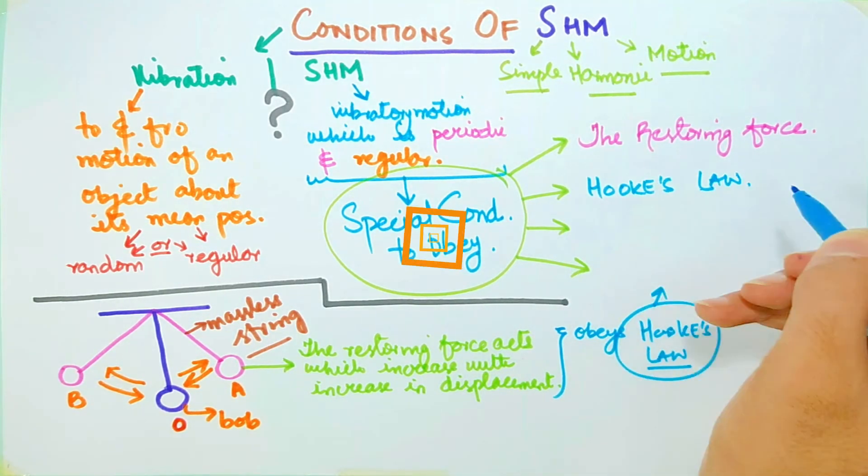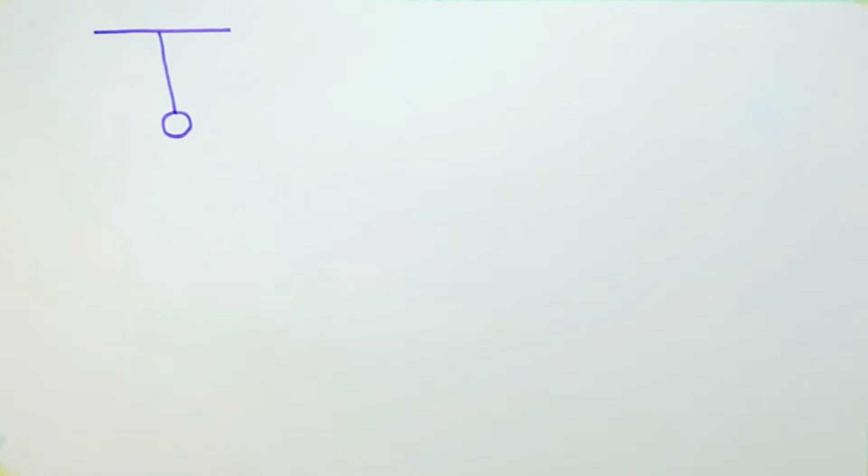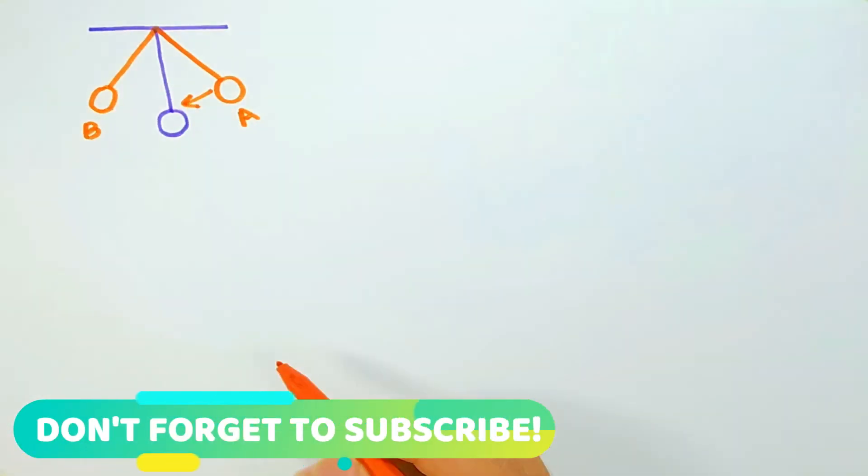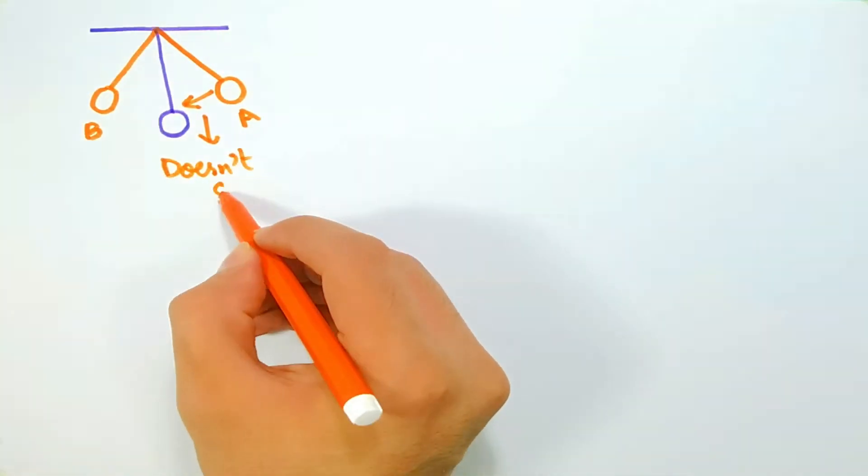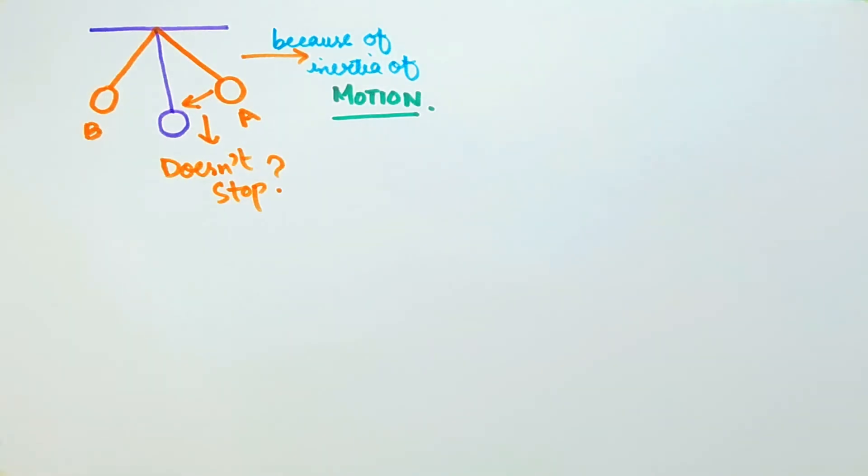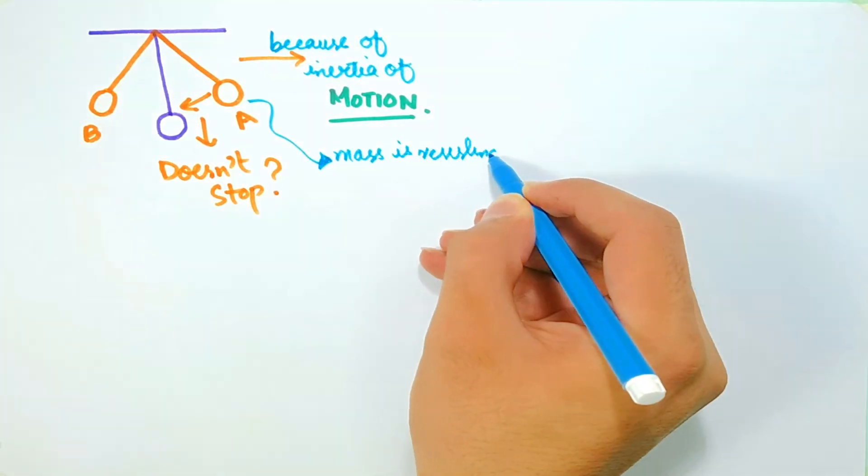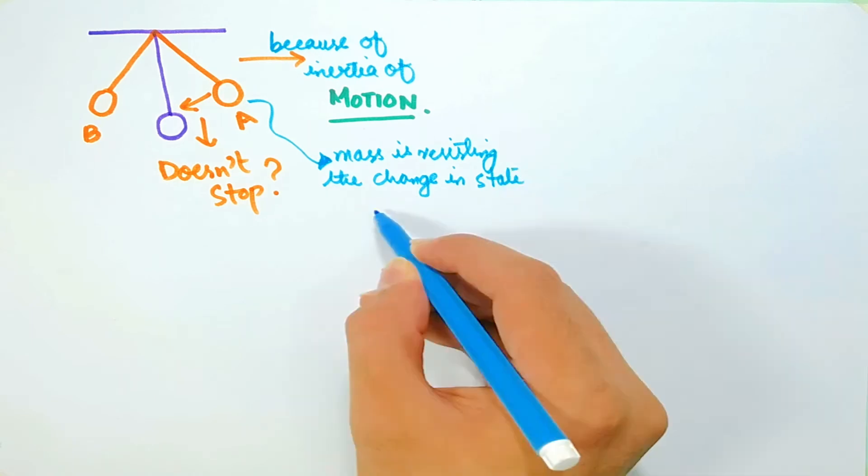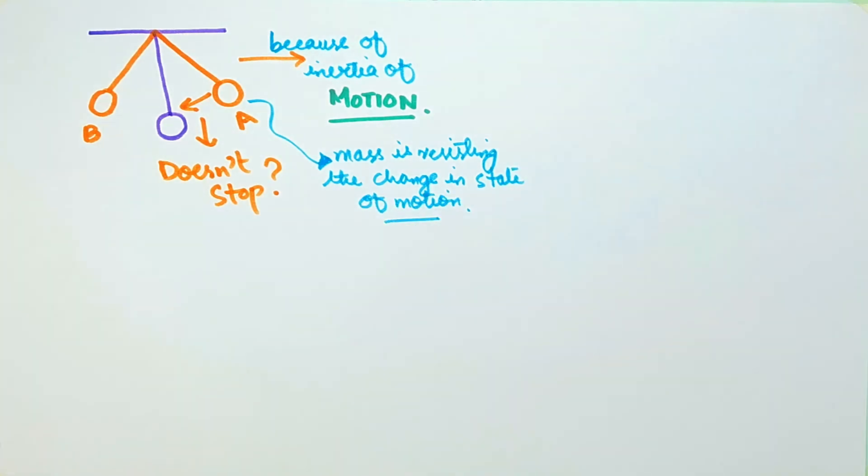Now, due to the restoring force, M moves from A to the equilibrium position O, but it doesn't stop. Why? This is because of inertia of motion, that the body of mass M is resisting its change in state of motion, and it continues to move towards the other extreme position, position B, due to the increased velocity and inertia of motion at the mean position.